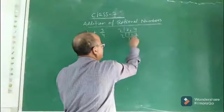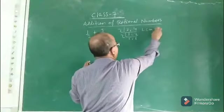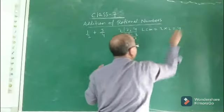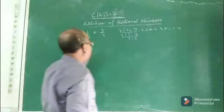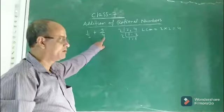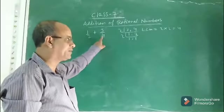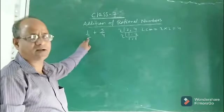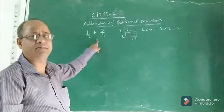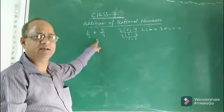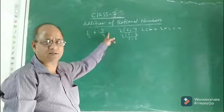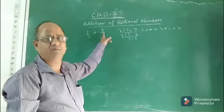The LCM of 2 and 4 is 2 into 2, that is 4. So LCM equals 4. We have to make both denominators 4. Here the denominator is already 4, so we need not change it. We have to make the denominator of 1 by 2 equal to 4. Then the two rational numbers will have the same denominator and can easily be added. If they have the same denominator, you simply add the numerators. This was the process of adding unlike fractions in class 5.